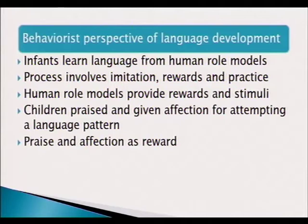Human role models provide rewards and stimuli. As adults, we are the ones that provide rewards and also stimuli — stimuli is what encourages children to utter those words they copy from adults. Children are praised and given affection for attempting a language pattern. If they attempt, you praise them and give them affection, and they continue. Your praise and affection serves as reward. This is how the behaviorist perspective views language development in children.